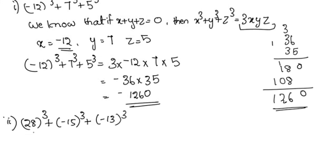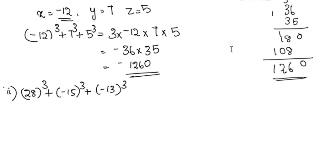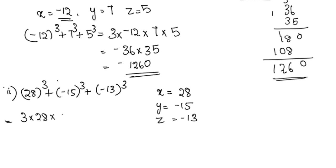Second part: 28³ plus negative 15³ plus negative 13³. Using the formula x³ plus y³ plus z³ equals 3xyz when x plus y plus z equals 0. Here x is 28, y is negative 15, and z is negative 13. Since 28 minus 15 minus 13 equals 0, we can apply the formula: 3xyz.